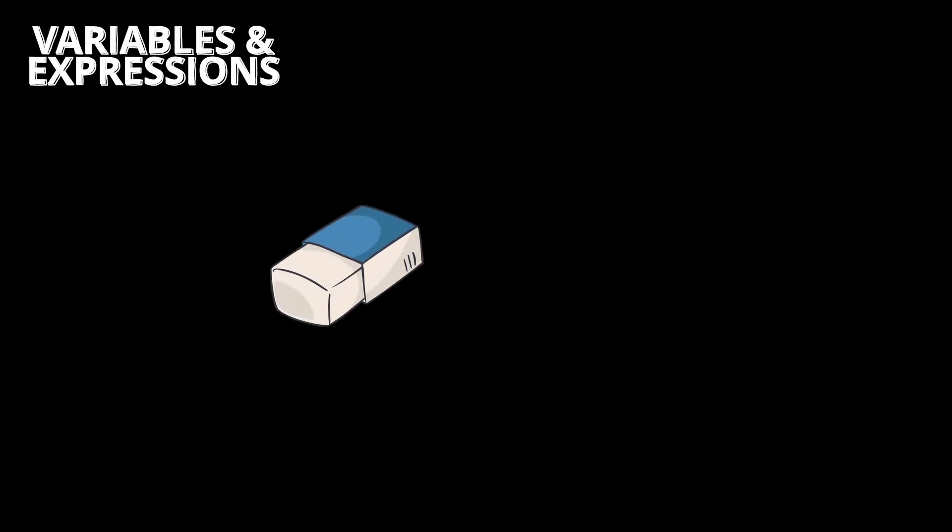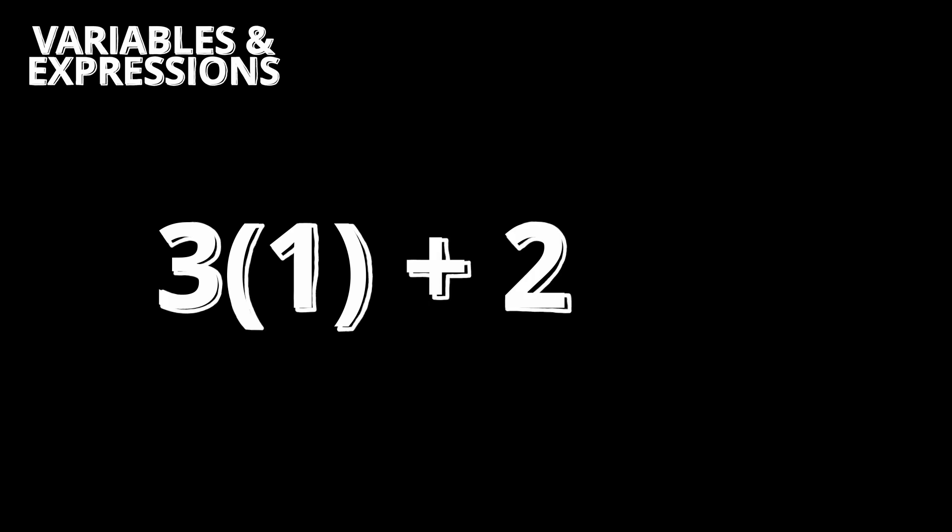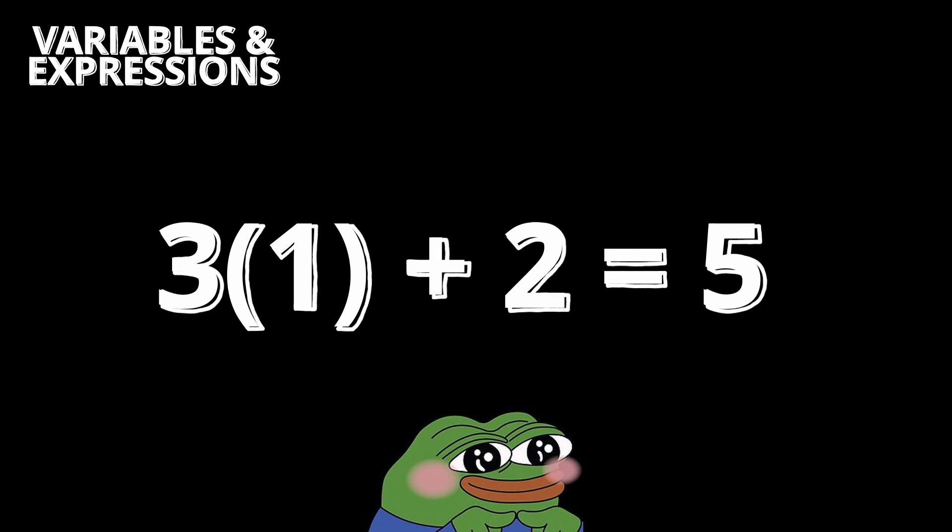And so, if x is equal to 1, then we have 3 times 1 plus 2 is equal to 5. See how that works? An expression is just a combination of these things to tell you how the numbers work hand in hand.